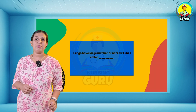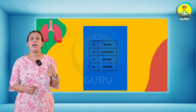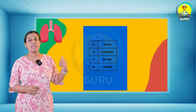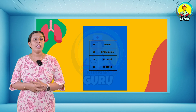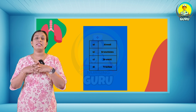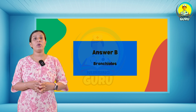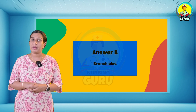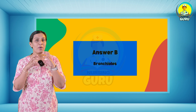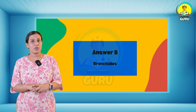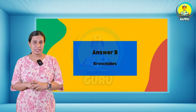Fourth question: lungs have a large number of narrow tubes called what? The options are alveoli, bronchioles, bronchi, and trachea. The right answer is bronchioles — option B. Bronchioles are the smaller branches of bronchial airways in the lower respiratory tract.